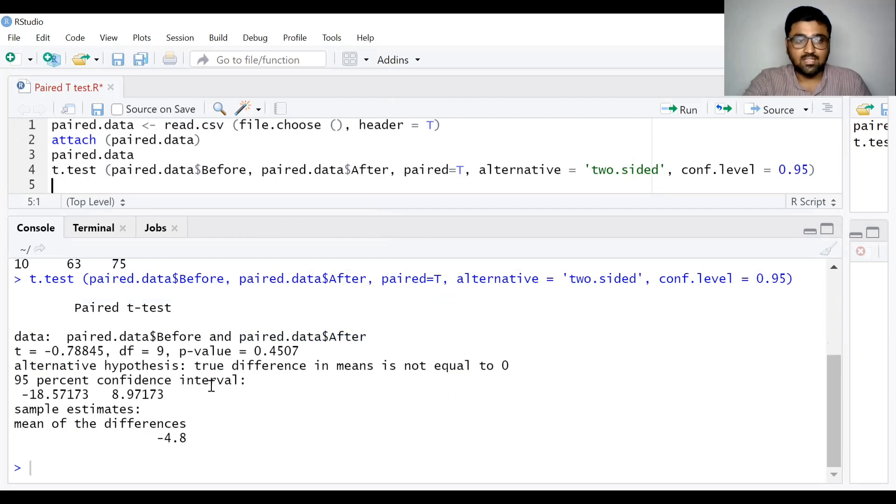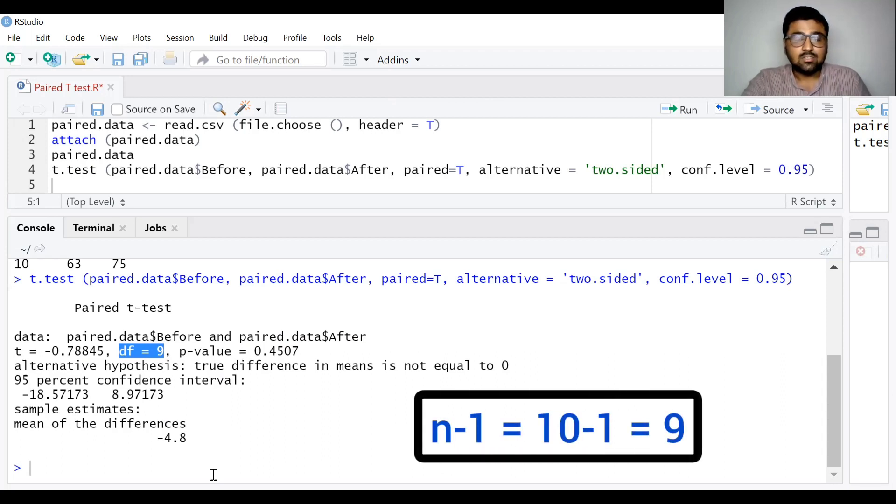Here we have the result. Our test statistic is minus 0.78845. The associated degree of freedom is 9. We know that degree of freedom for paired samples t-test is n minus 1. We have 10 observations. So degree of freedom is 10 minus 1 that is 9.